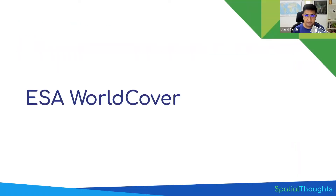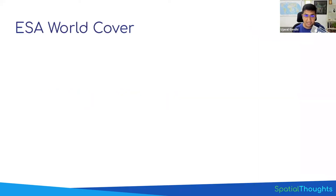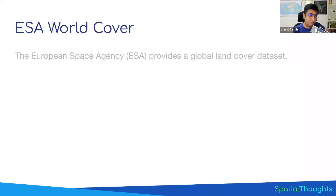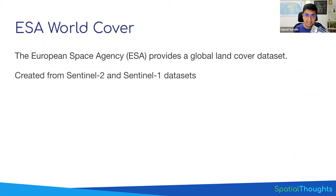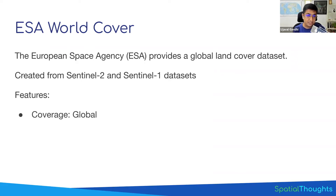The dataset that we'll be working with is called ESA World Cover. This is a global land cover dataset at 10-meter resolution created by the European Space Agency based on the Sentinel-1 and Sentinel-2 datasets. This is one of the first global datasets at this resolution. So regardless of where you are in the world, you'll be able to access this data and get land cover classification that you can readily use in your project. It offers a resolution of 10 meters per pixel, which is great, so you can get a lot of detail.